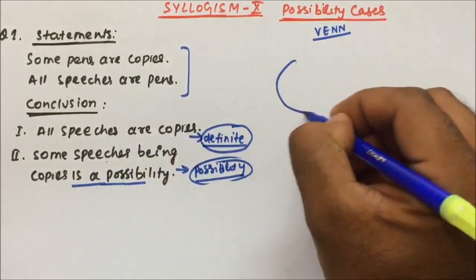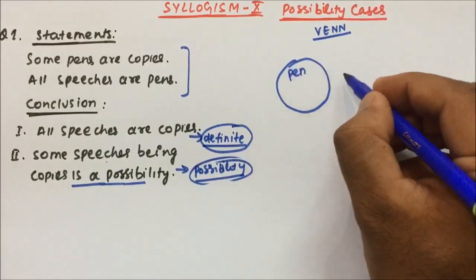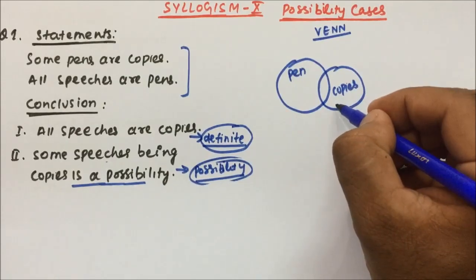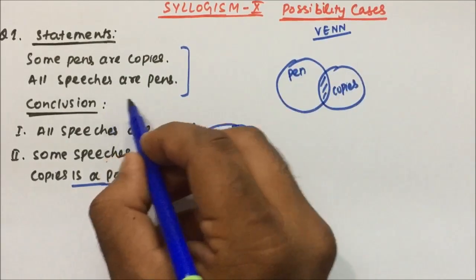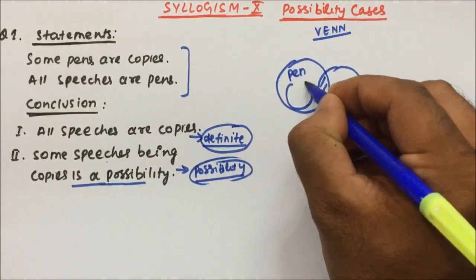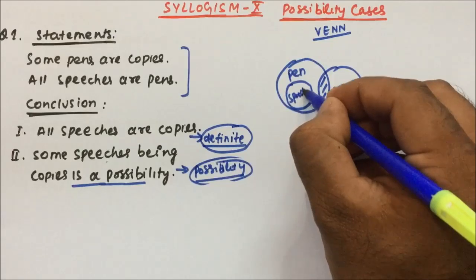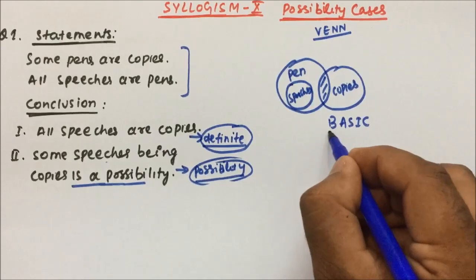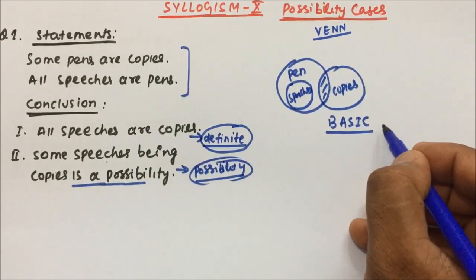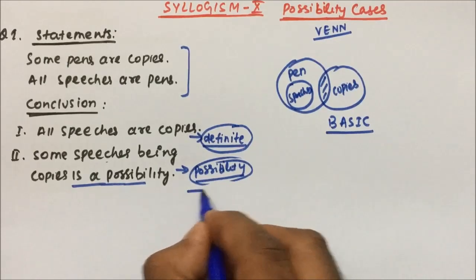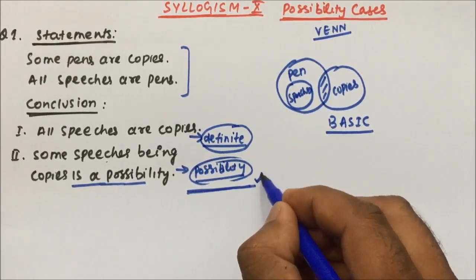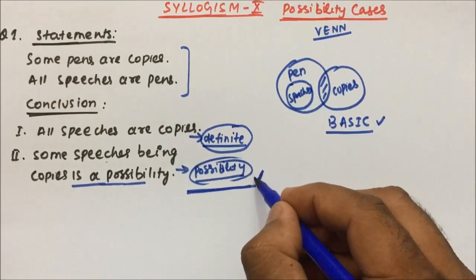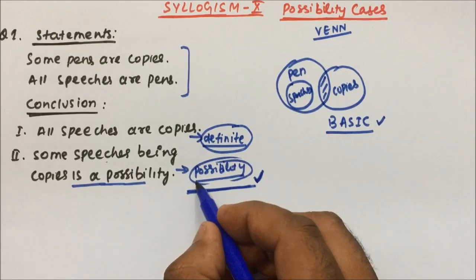So the statements are: some pens are copies — let's draw pens here, and some part of pens will be copies and some part of copies will be pens. And all speeches are pens, meaning all speeches are inside the pens. This is the basic diagram. We might also have to draw a possible diagram, because one conclusion is completely based on possibility — not on the definite or basic diagram.